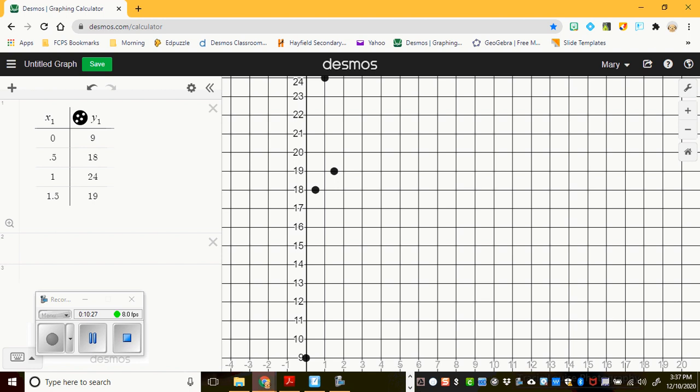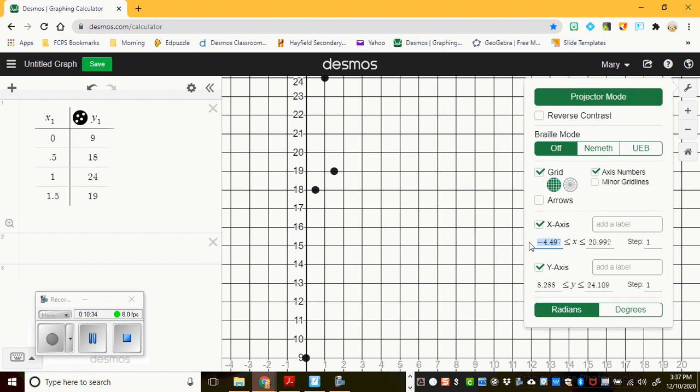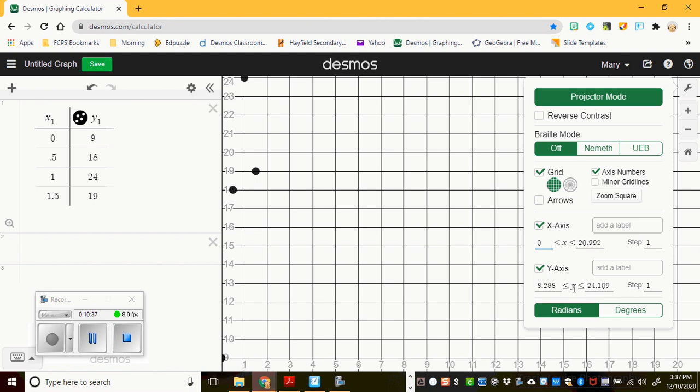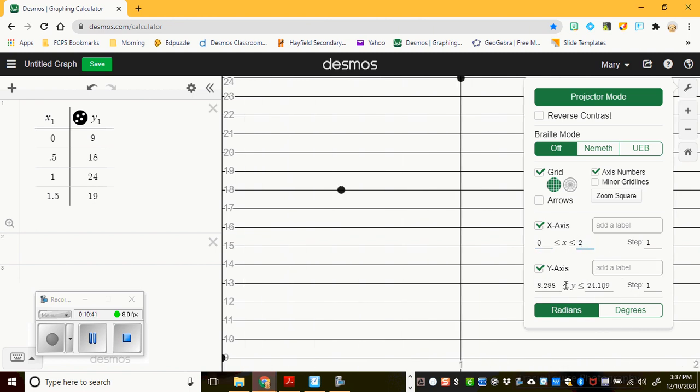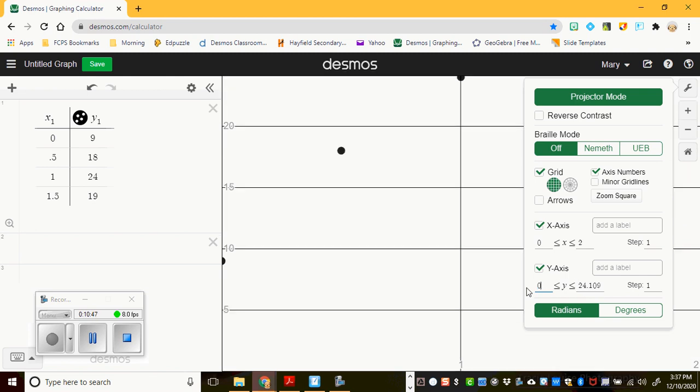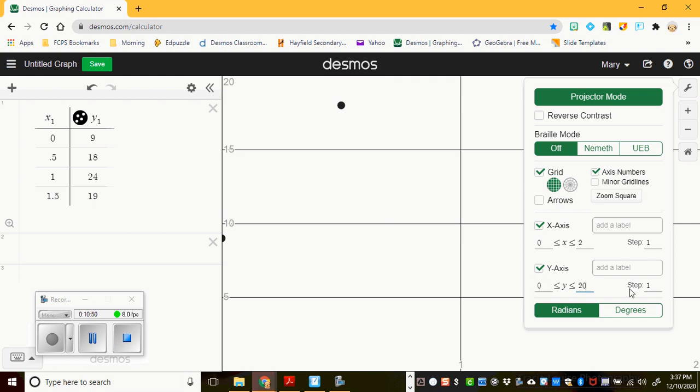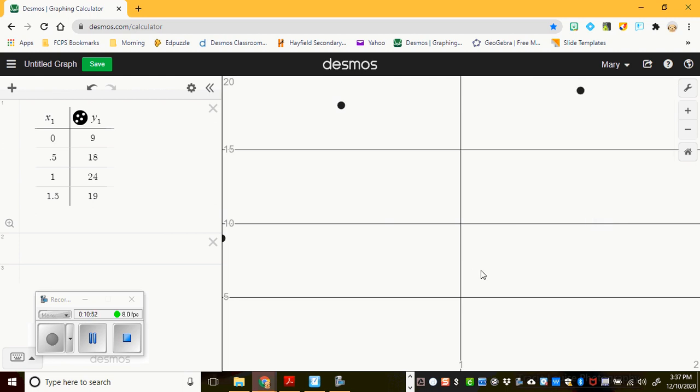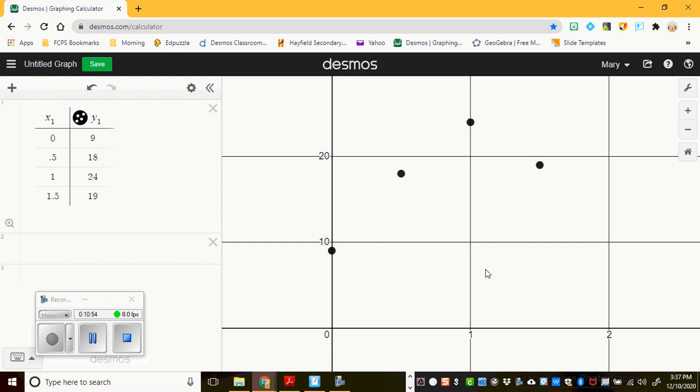Alright. So I'm going to go ahead to my settings right here. I'm going to tell this thing, let's go from, my x values go from 0, and the biggest, I guess, is 1.5. So I'm going to pick 0 to 2. Go by step of 1. And then over here for my y's, I'm going to pick 0 to 20, how about. And then go by 1. Let's see what happens there. Alright. Now I can zoom out. Okay. That looks a little bit better. So I can see kind of a parabola shape.